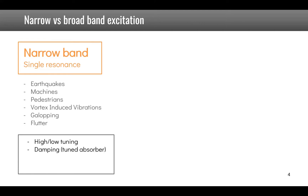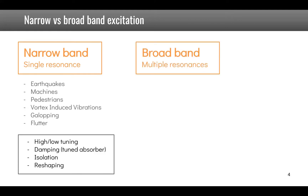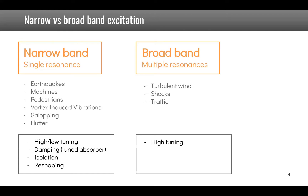Solutions for narrow band problems include high or low tuning, damping using a tuned absorber, isolation, and reshaping. For broadband problems involving multiple resonances — such as turbulent wind, shocks, or traffic induced vibrations — you will mostly be able to use high tuning, material damping, isolation, and reshaping.